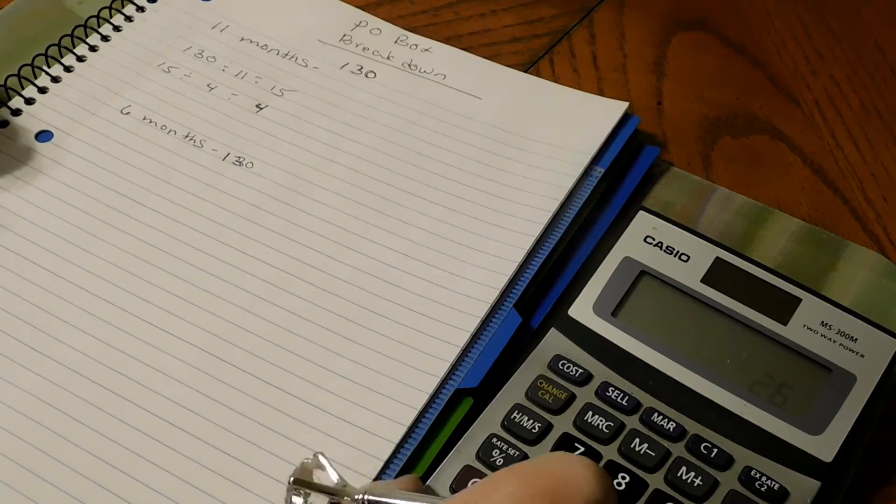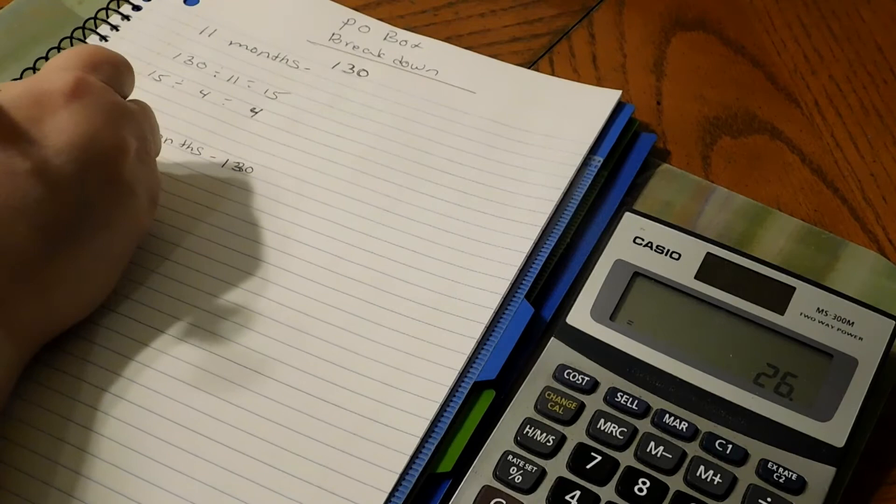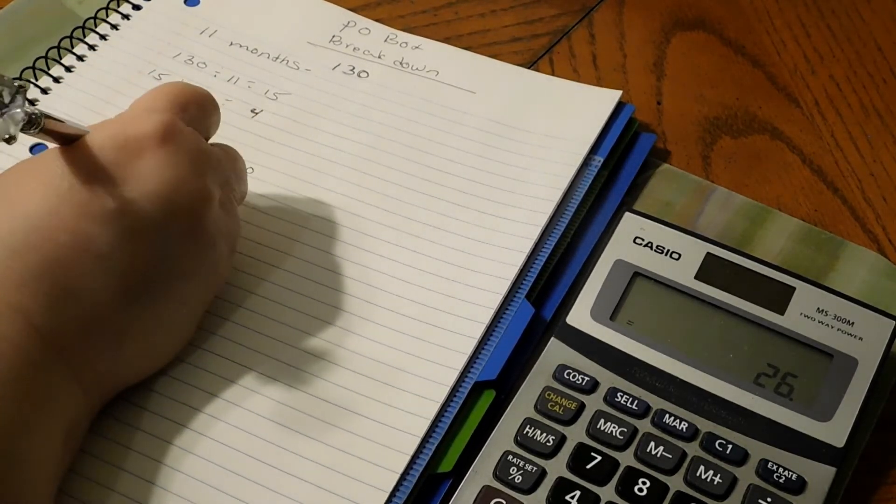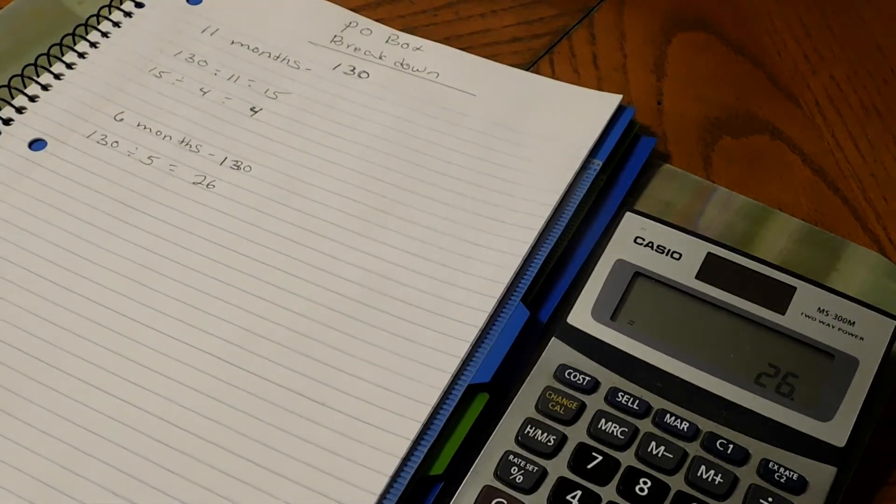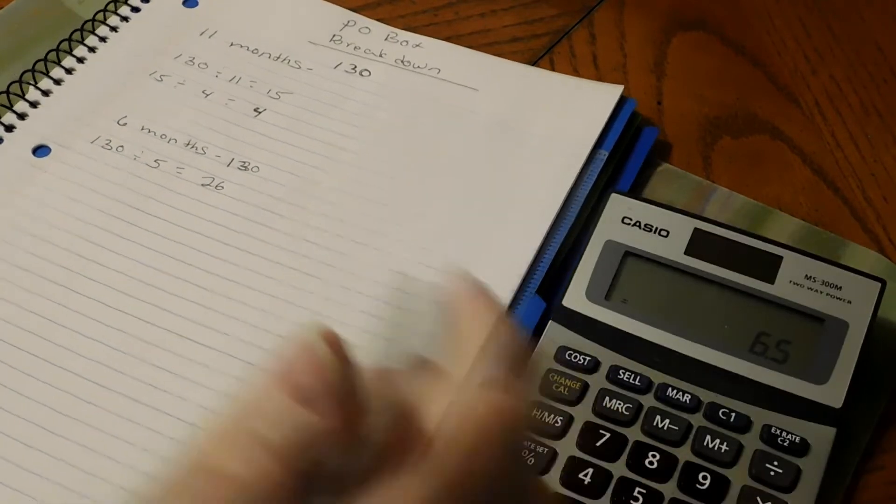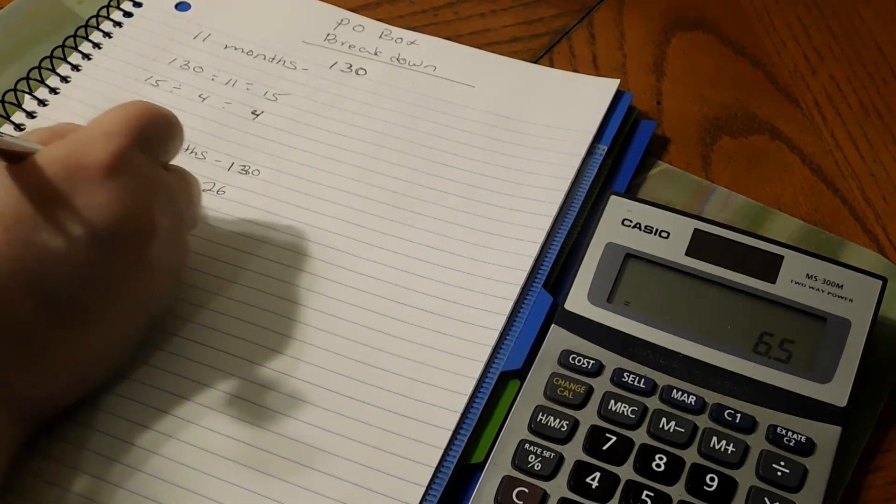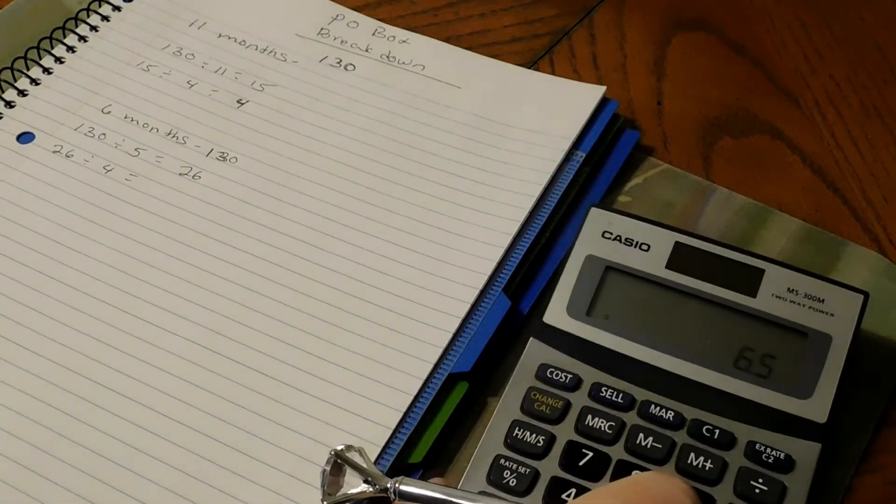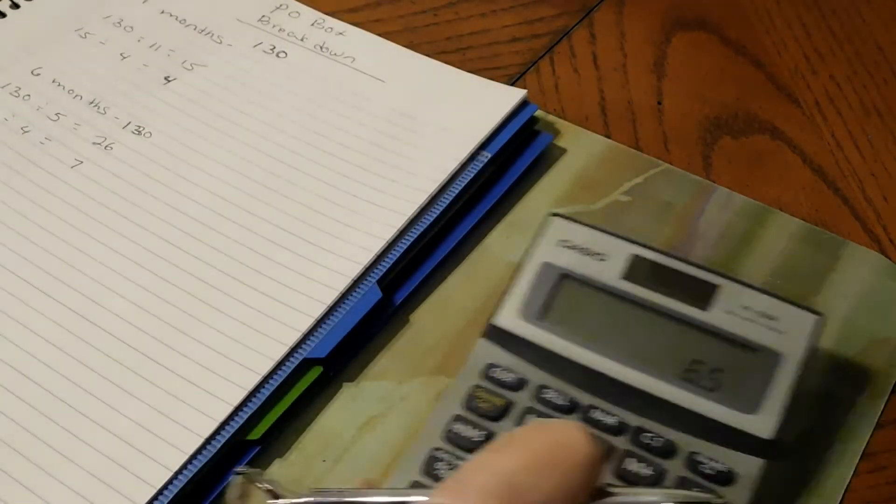So divide that by five, it comes out to $26 a month. So we're going to go $130 divided by five months is going to equal $26 a month. And then you're going to divide that by four. $26 a month, and you go $26 divided by four, it comes out to like $6.50 a week, but we'll round it up to $7.